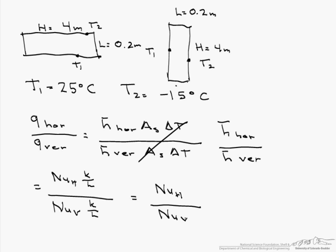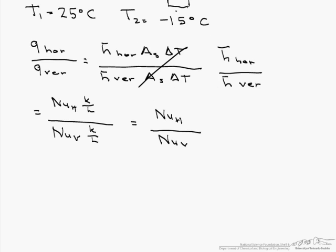And since the characteristic length for these cavities, which is 0.2 meters, is the same, that means that the Rayleigh number is going to be the same for both of them.